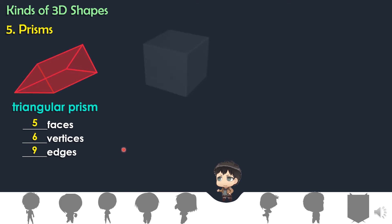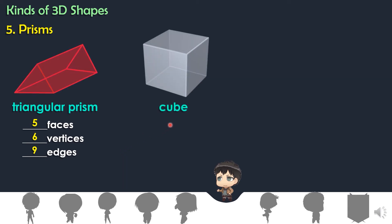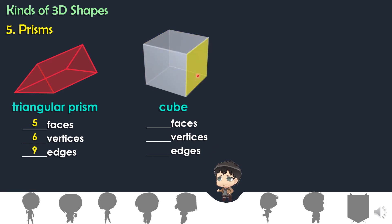Another kind of prism is cube. Let's find out the faces, vertices, and edges. Faces: one, two, three, four, five, six. A cube has six faces. How about the vertices? One, two, three, four, five, six, seven, eight. Cube has eight vertices.